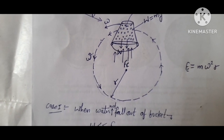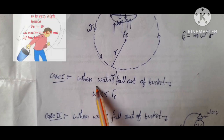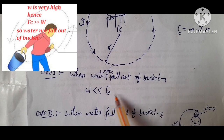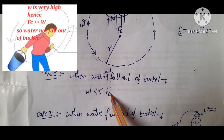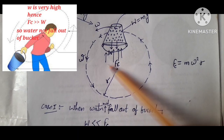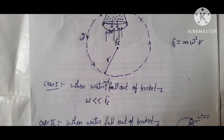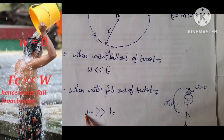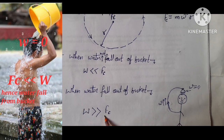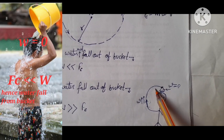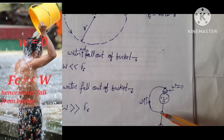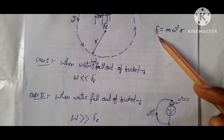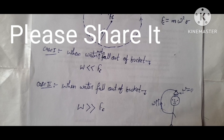There are two cases. Case one: if you want water not to fall out of the bucket, you need to increase centrifugal force compared to weight w. Case two: when water falls out of the bucket, you need to increase water weight w compared to centrifugal force, because at the top of the head the omega value is zero, so centrifugal force is almost zero compared to w.